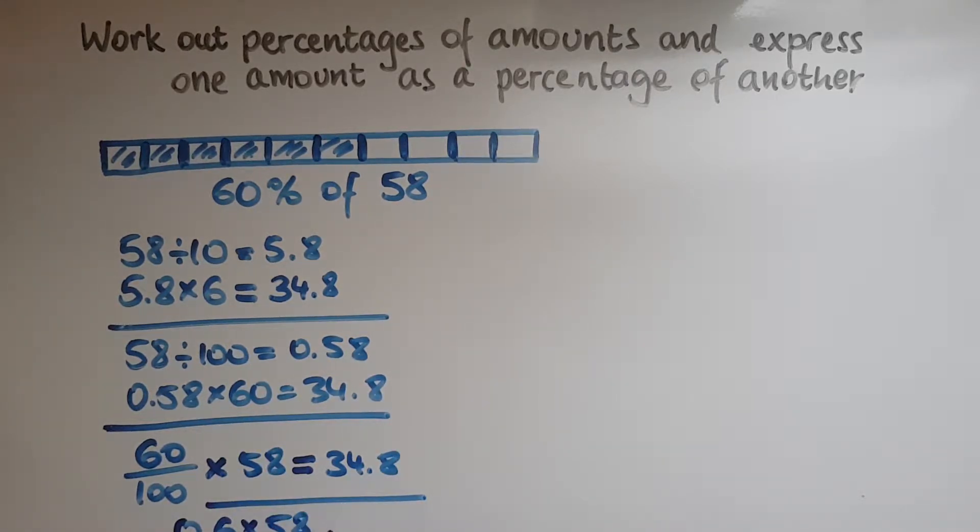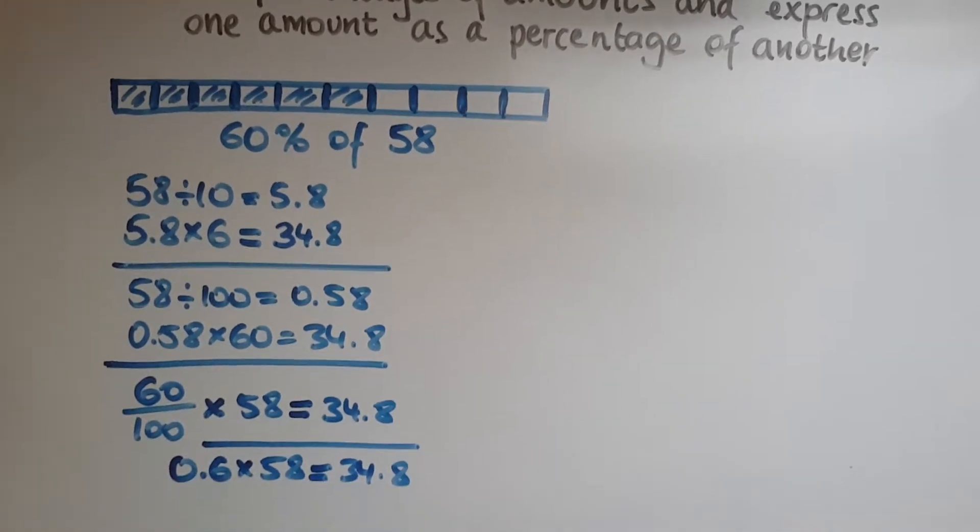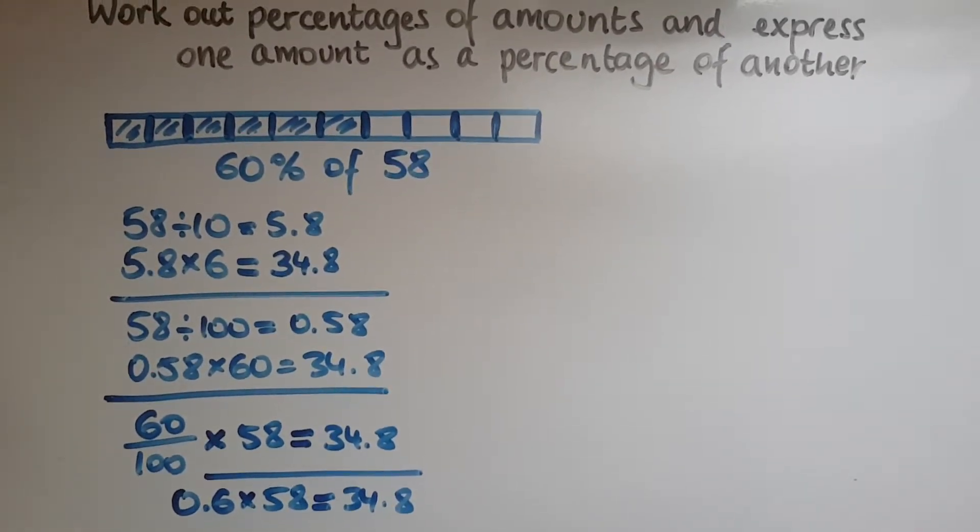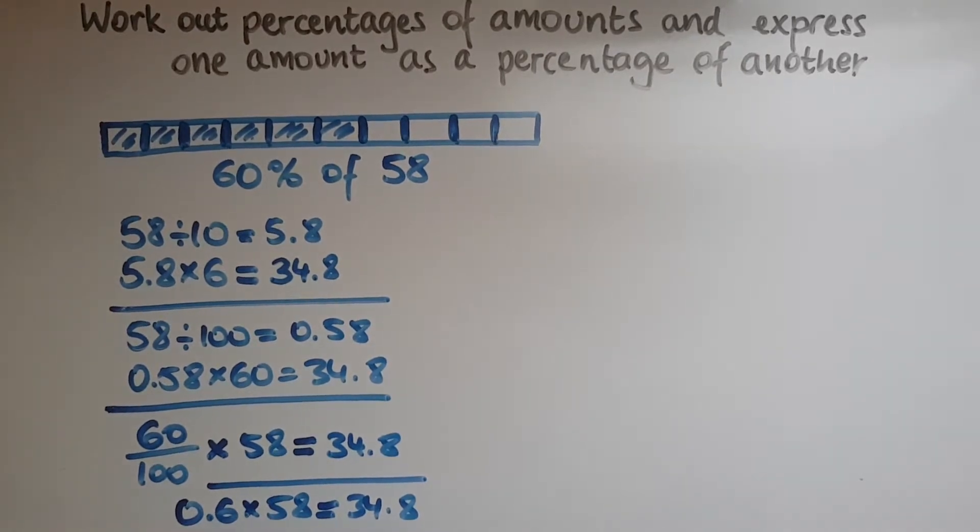And then going back to this, multiplied by 58. So this is a good calculator method. And it gives us 34.8 again. So all these methods give us the same answer.